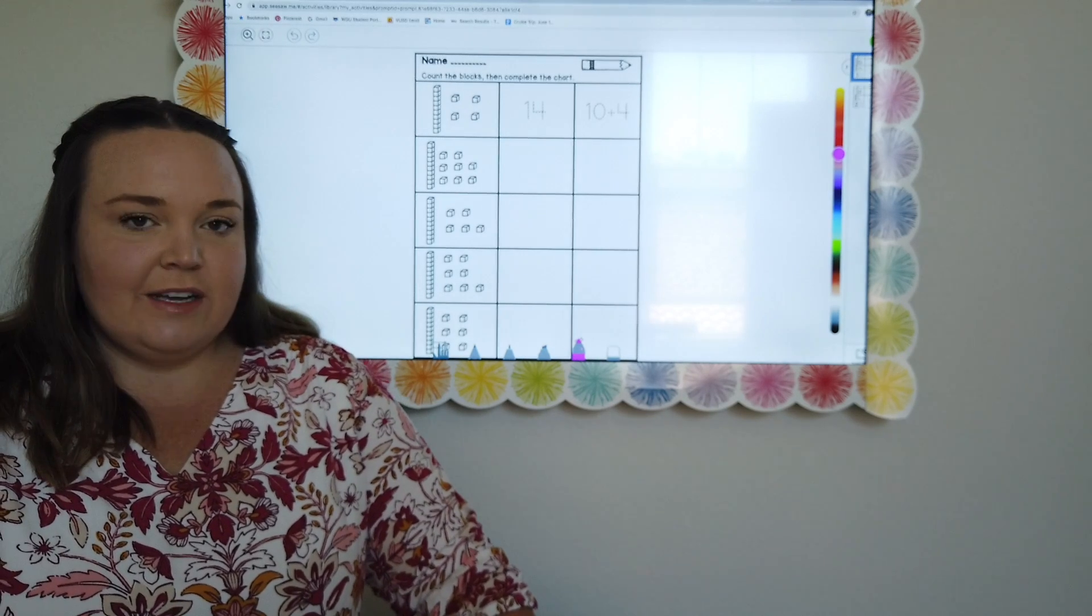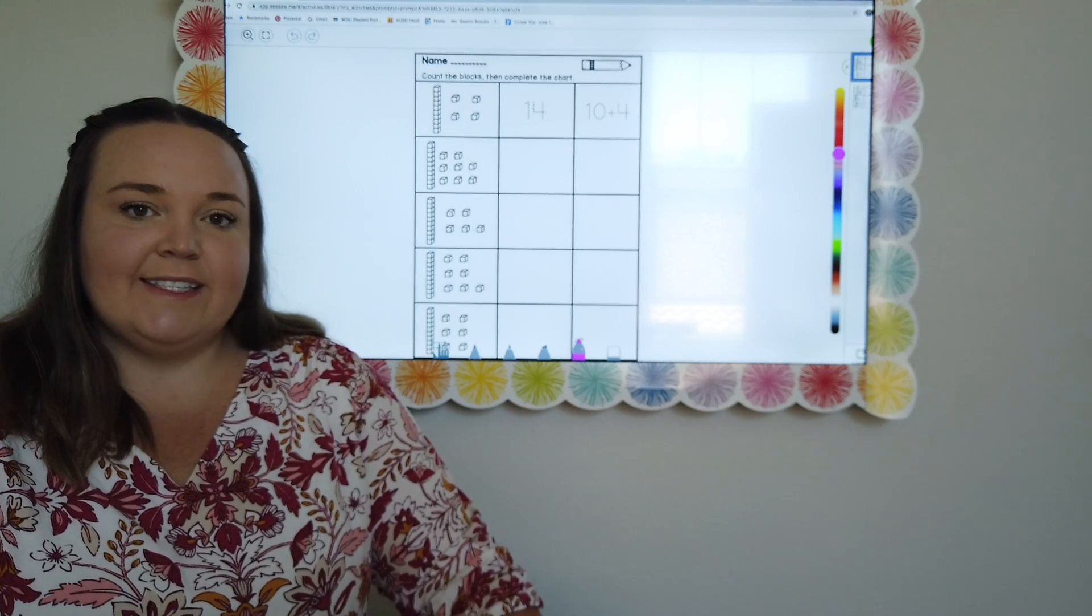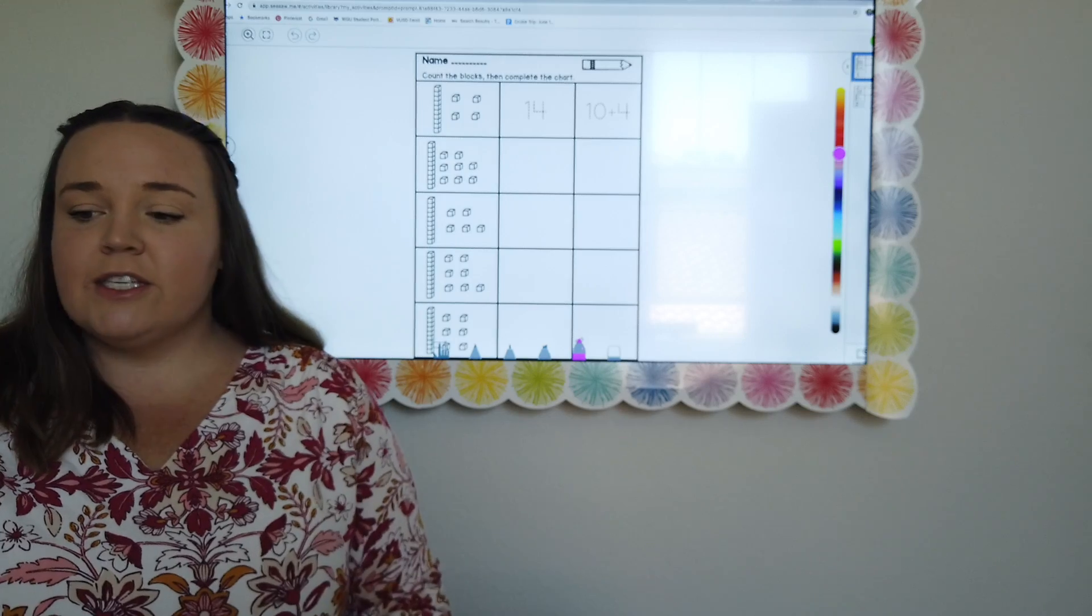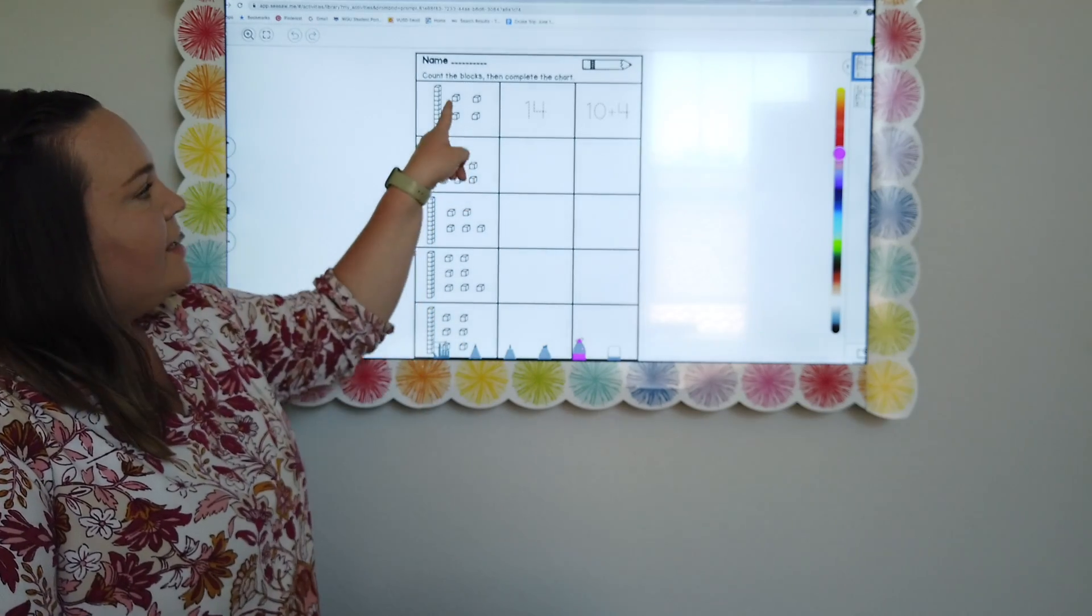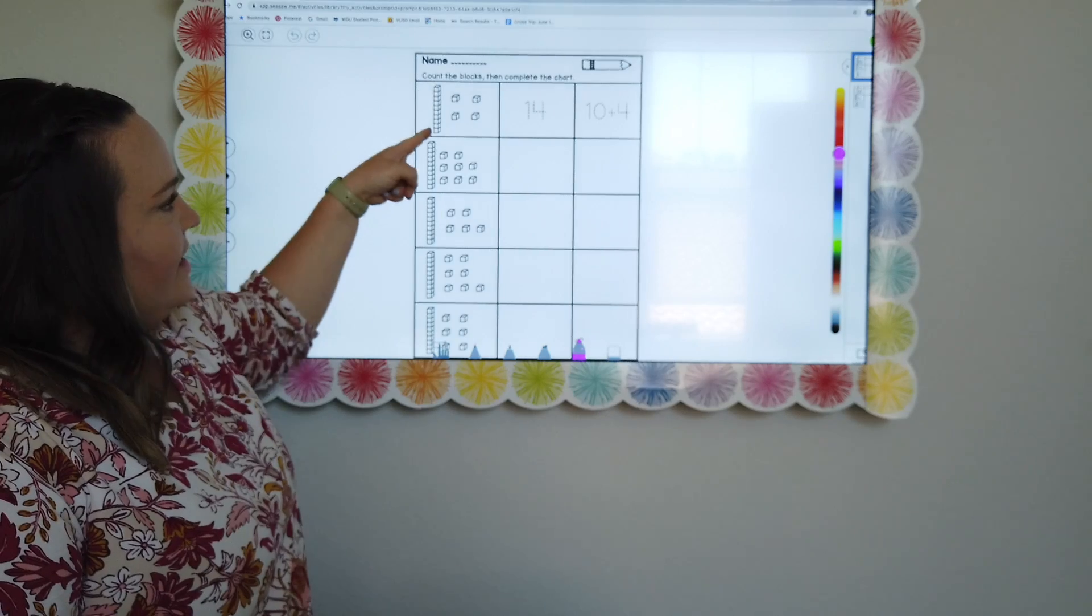Just keep in mind that we are focusing on the place values so we want to make sure that by now we definitely have it in our heads that we have the ones column and we have the tens column. So looking at this up here, these are going to be the ones because they're broken out into one cube and these are the tens.